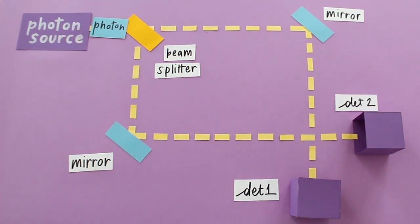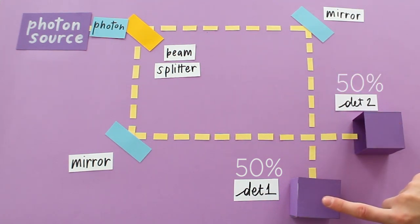Now instead, a photon enters an interferometer which is not closed by the second beam splitter. In this configuration, the experiment shows that both detectors can click with the same 50-50 probability.